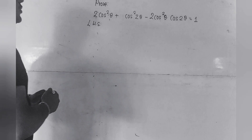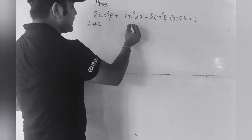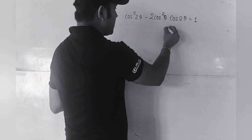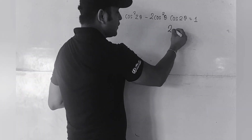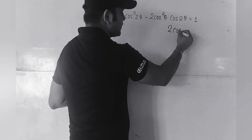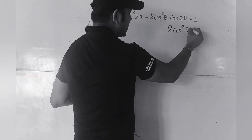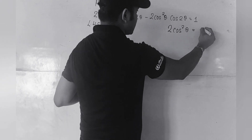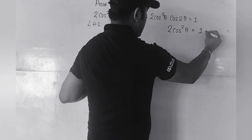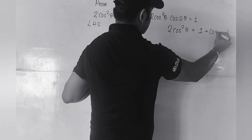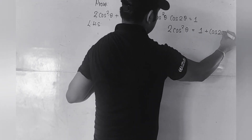So now we are solving this curve on the board: 2cos²θ. Let us recall the formula of 2cos²θ. The formula for 2cos²θ is 1 + cos2θ.